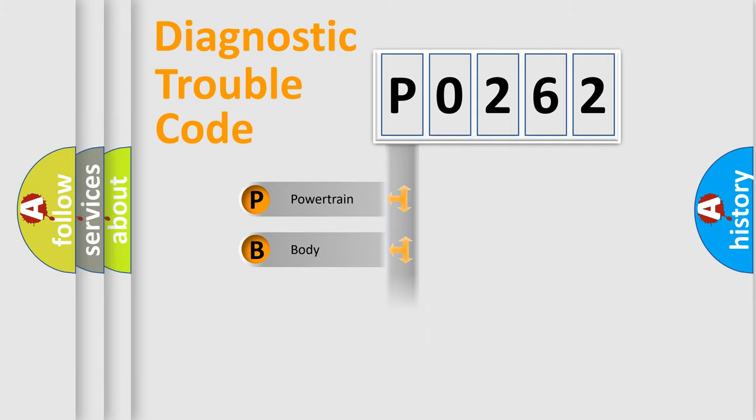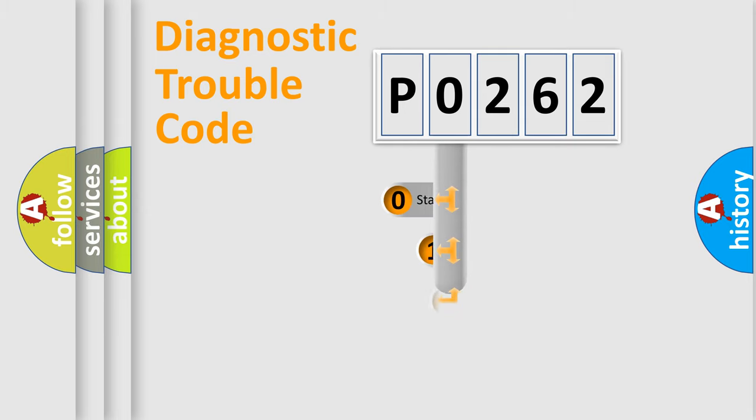We divide the electric system of automobile into the four basic units: Powertrain, Body, Chassis, and Network. This distribution is defined in the first character code.